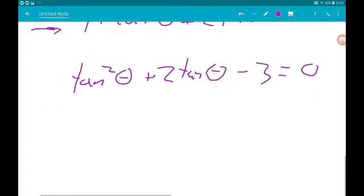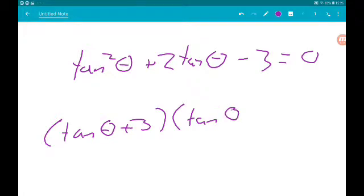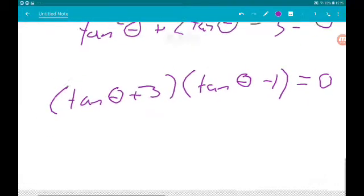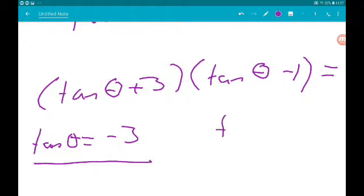Now we can factorize this. We're gonna need tan theta plus 3 and tan theta minus 1 equals 0. So that leaves us with two equations to solve.